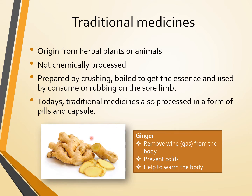The first example of traditional medicine is a common one — ginger, or halia. It is used to remove wind or gas from the body, prevents colds, and helps to warm the body.